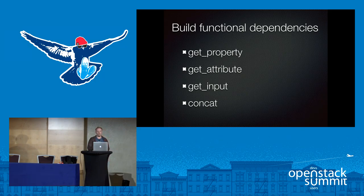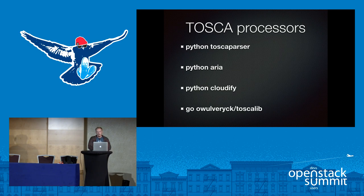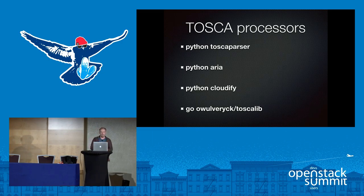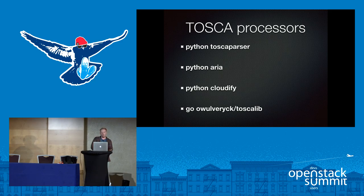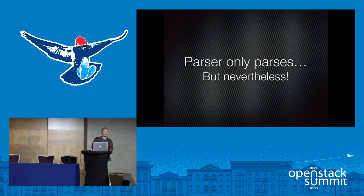Since we started working with iOrchestra, we tried to figure out if there are any existing tools designed to work with Tosca. We have a Tosca parser built by the Tucker team that lives under the big tent. We have Aria, started by Giga Spaces, as an extensible framework for Tosca parsing. We have a parser for Cloudify, but it's too specific to Cloudify itself. And we have a Go parser called Tosca lib. Basically, they all parse — but none of them actually provide you something executable. What's the value of having a template if you can't run it?